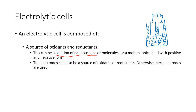Or it could be a molten ionic liquid. For example, NaCl(l) as a molten liquid versus NaCl(aq) as an aqueous solution. You can take a salt, melt it at very high temperature, and get positive sodium and negative chloride ions. The electrodes themselves can also act as a source of oxidants and reductants — for instance, iron or cobalt acting as the electrode and as an oxidant or reductant.